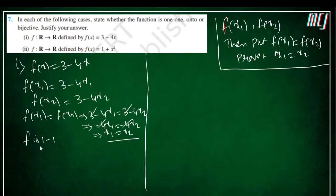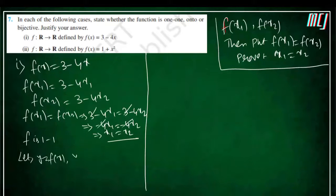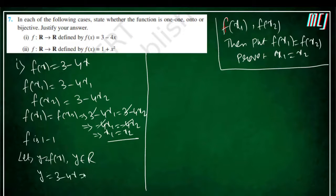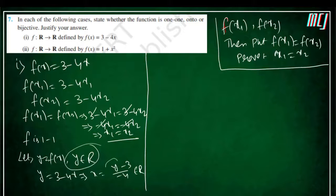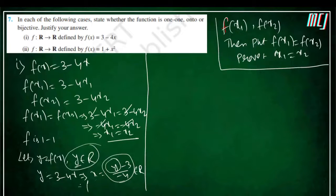Now we will check onto. For onto, let y be a real number. From y = 3 − 4x, we get x = (y − 3) / (−4). Since y belongs to real numbers, this x will also be a real number. So for every y, we are getting a preimage in the set R. Therefore f is onto.